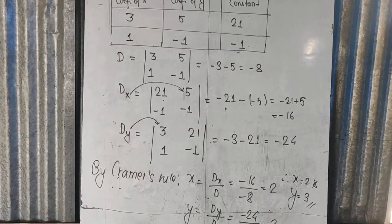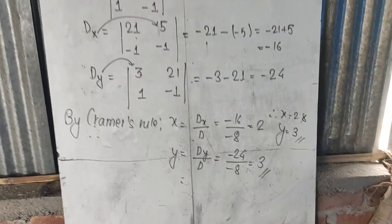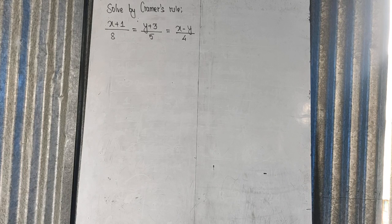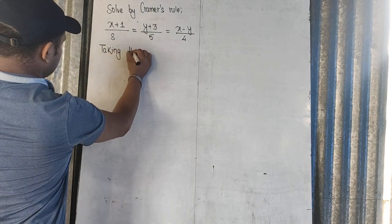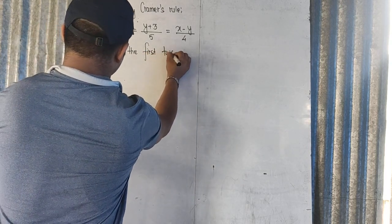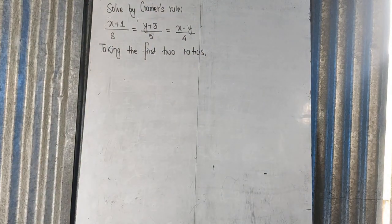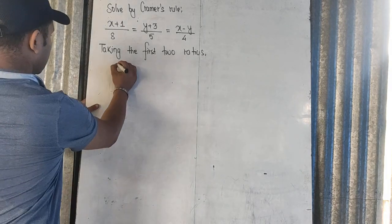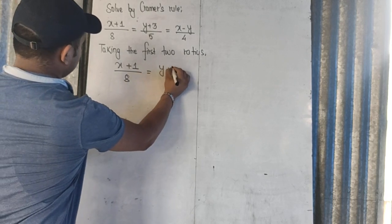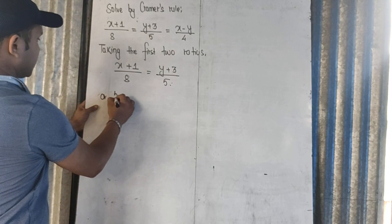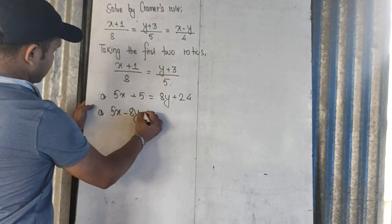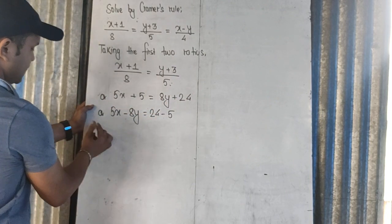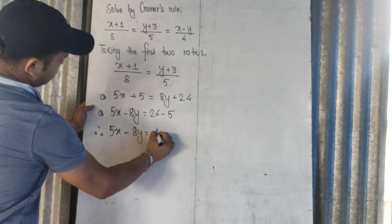Now in this next equation we take two equations. Taking the first two ratios, we get: x plus 8 by something equals y plus 3 by 5. Cross-multiplying gives 5x plus 5 equals 8y plus something, which simplifies to 5x minus 8y equals 90. This becomes equation one.